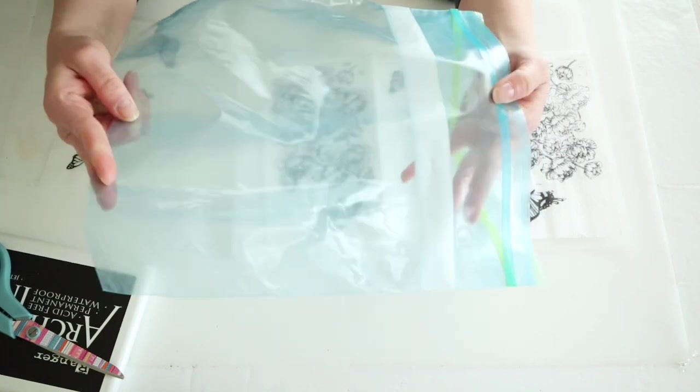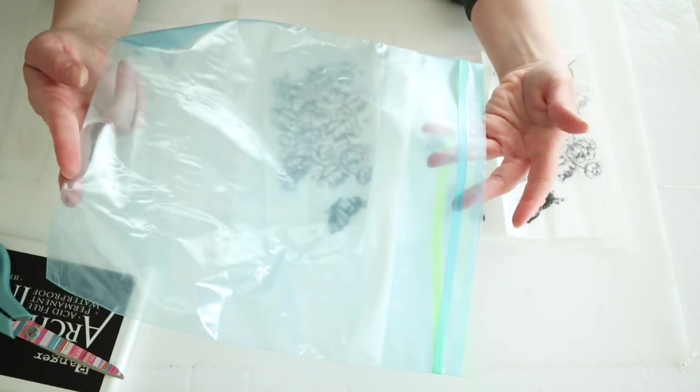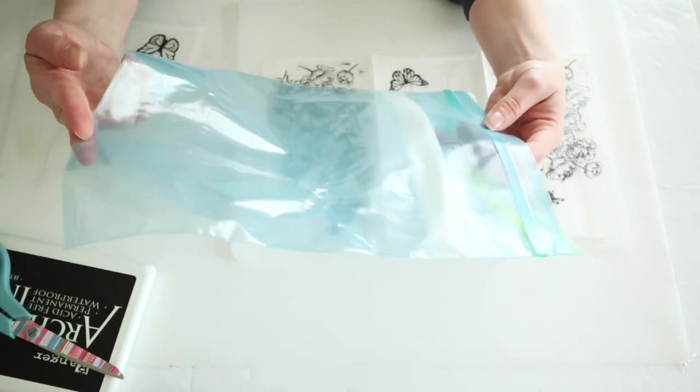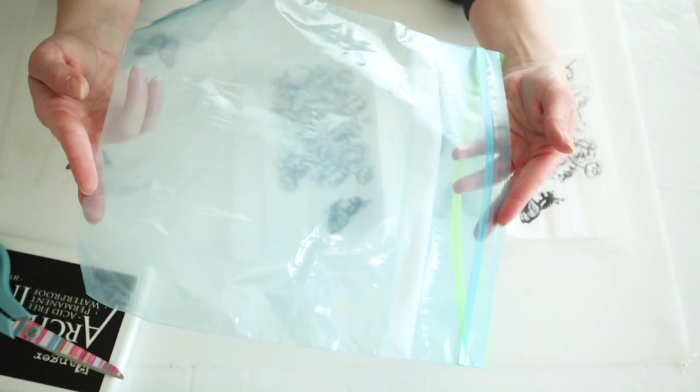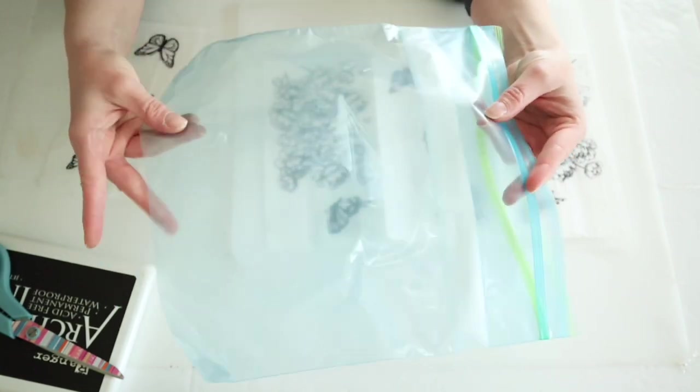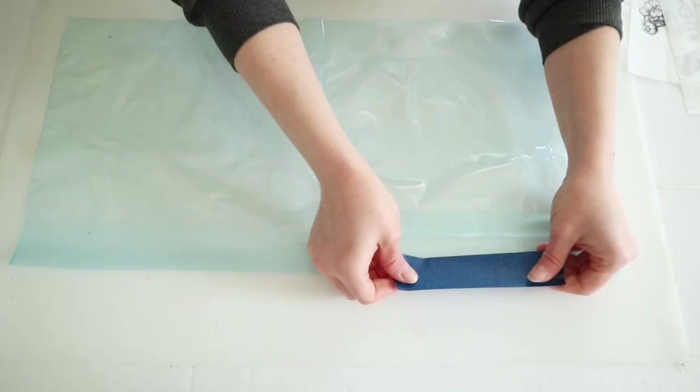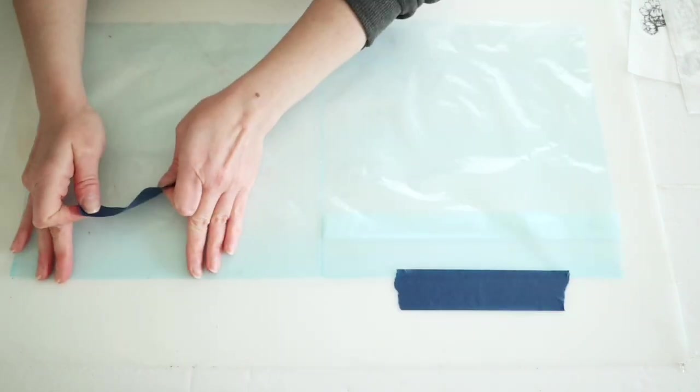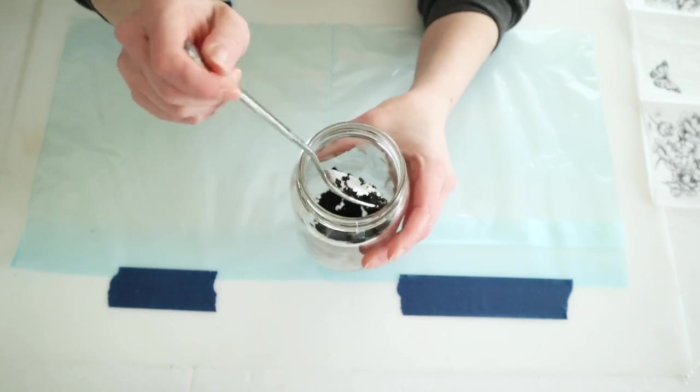Once I have my napkin prepared, I'm grabbing a gallon-size freezer bag. You can use any plastic for this like plastic wrap or grocery bags, but it has to be plastic or you won't be able to remove your napkin. I'm cutting my bag open, cutting off that little ziplock piece, and taping this down to try to get it to not move as much.